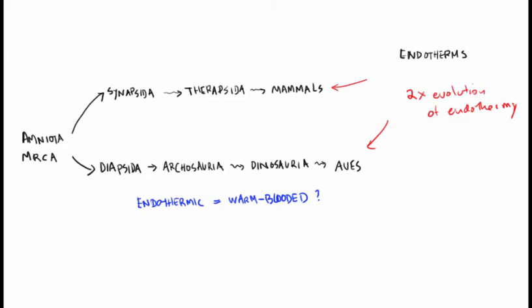Birds and mammals are both warm-blooded and both endothermic — these endotherms do maintain an elevated body temperature. A non-warm-blooded animal like a lizard could have its blood temperature drop substantially below that of a typical hummingbird. However, lizards often actually have pretty warm blood even though they are technically ectothermic.